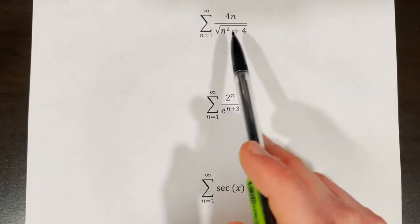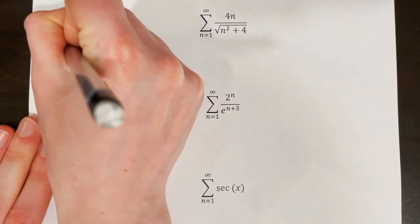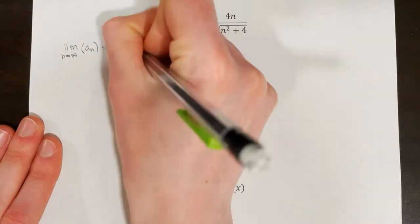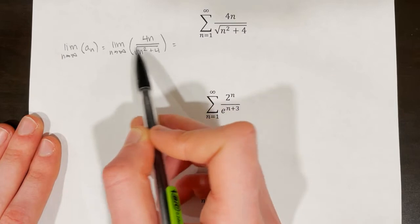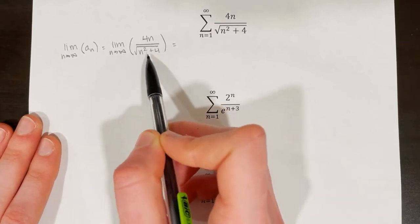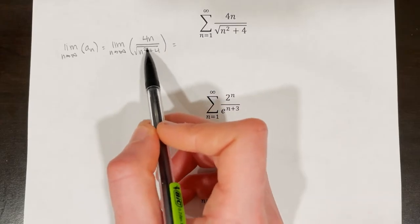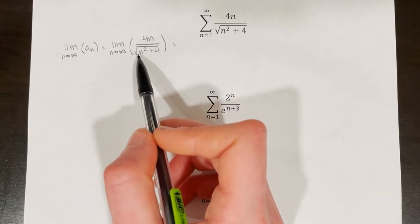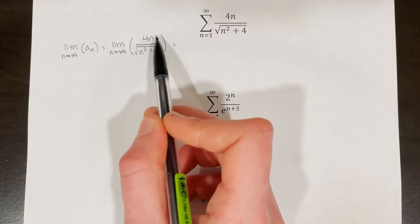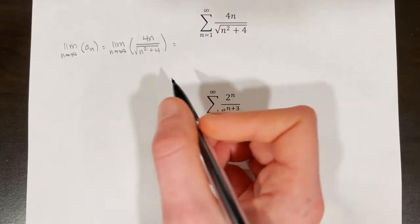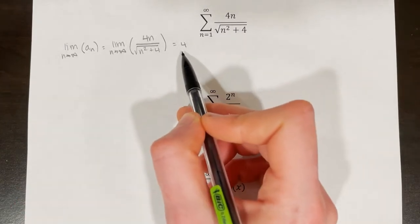Next, determine the convergence or divergence of the series from n equals 1 to infinity of 4n over the square root of n squared plus 4. Taking the limit as n approaches infinity of a sub n: with 4n in the numerator and the square root of n squared — which is essentially just n — in the denominator, the plus 4 is negligible. We have 4n over 1n, which gives a horizontal asymptote of 4. Since the limit is 4, not equal to 0, this series diverges by the nth term test.